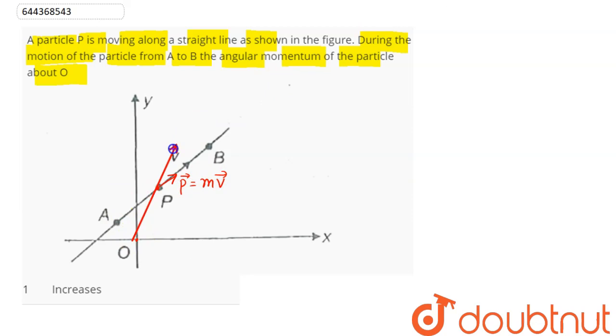Here we have the position vector about origin O, R vector, making an angle theta with linear momentum.